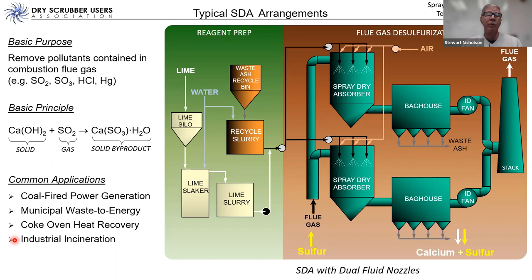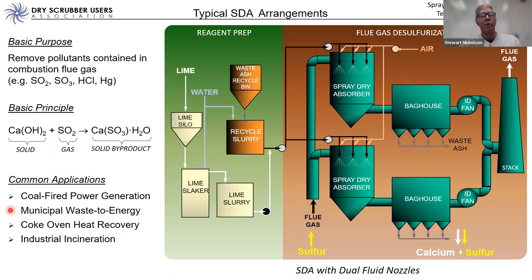So the three basic styles of SDA are: rotary atomizer single-pass, rotary atomizer with fly ash recycle, and dual fluid nozzle. We also showed the dual fluid arrangement with fly ash recycle, though many are not fly ash recycle — municipal waste-to-energy systems, for example, are all single-pass dual fluid nozzle. Coke oven heat recovery systems are all single-pass as well. Most municipal waste-to-energy plants are single-pass dual fluid nozzle or a few rotary atomizer applications.